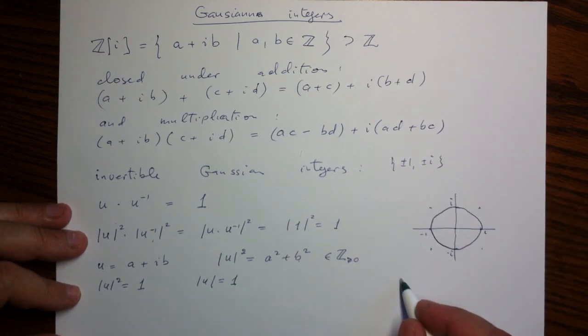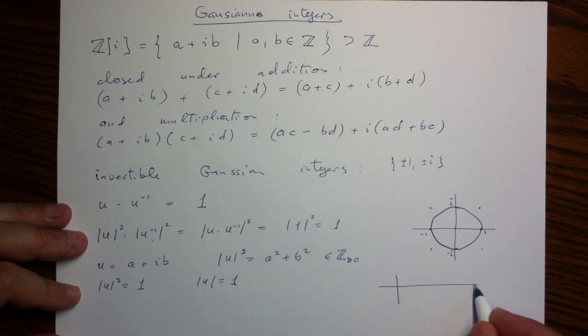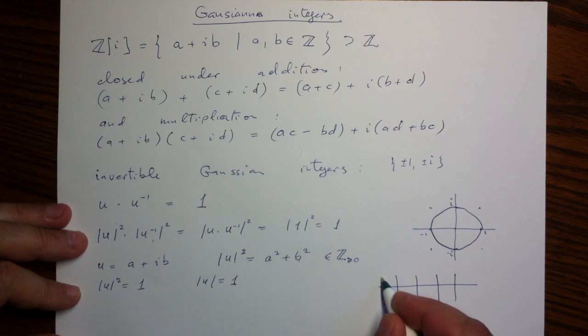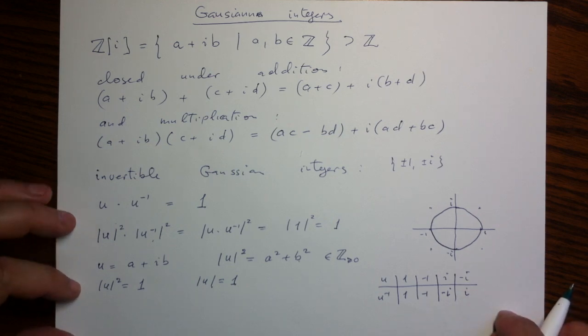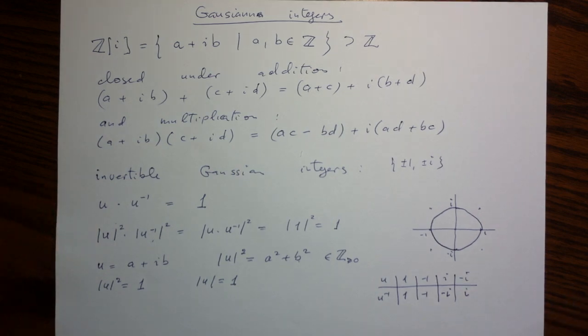So, I can complete it all by really listing how they invert. So, if here we have u: one, negative one, i, negative i, we can list the inverse to that u. And for one and for negative one, the inverses are themselves. And, for i, that is a little exercise to see that the inverse is negative i, and vice versa, the inverse for negative i is i. So, that is it about basic arithmetic of Gaussian integers. Thank you.